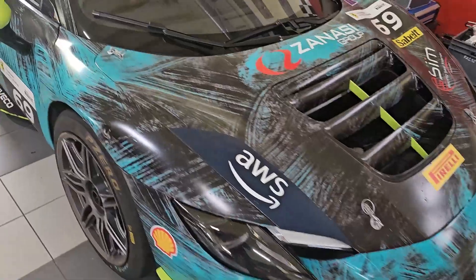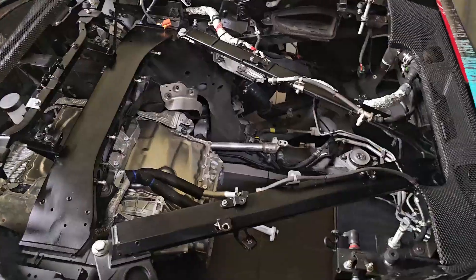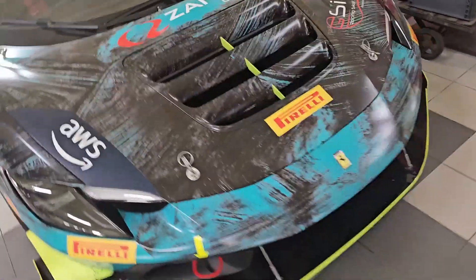So check this nice Ferrari out, and check it's missing its engine. Because the engine is in the dyno. That's it on the car.